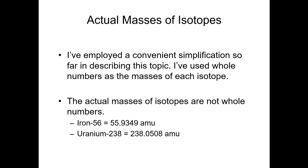Let's go on and talk about this in a bit more depth. I've employed a convenient simplification so far — I've used whole numbers for the masses of each isotope: lithium-6 weighed 6, lithium-7 weighed 7, boron-10 weighed 10, boron-11 weighed 11. As it turns out, the actual masses of isotopes are not whole numbers. The mass of iron-56 is actually 55.93 AMU, and the mass of uranium-238 is 238.05 AMU. There is essentially no isotope of any element that has an exactly whole number mass, except for carbon-12, because that's used as the definition of an atomic mass unit.